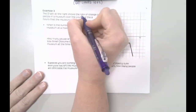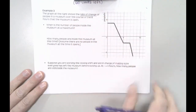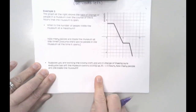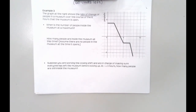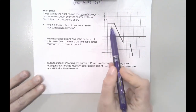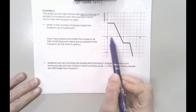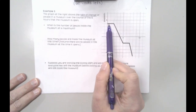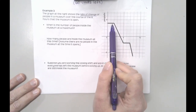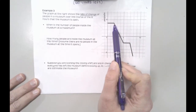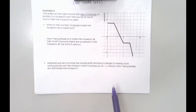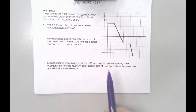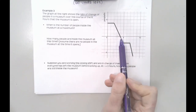One last example: the graph at the right shows the rate of change of people in a museum over the course of the 8 hours that the museum is open. If you look at the total number of people inside the museum — how fast is it changing? For example, the first 2 hours it's changing at a rate of 4 people per hour, specifically increasing by 4 people per hour because this is up in positive territory. The fact that this thing dips down into the negative doesn't mean there are suddenly negative people, but it means the number of people in the museum is decreasing after this time.